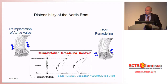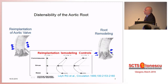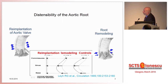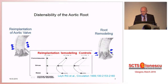Because there is annular dilatation, we have the choice between re-implantation and root remodeling. With re-implantation, we stabilize the root at all levels, including the annular, while in root remodeling, it is primarily the sinus and sinotubular junction that are stabilized.